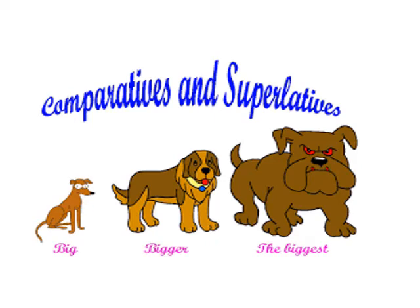Comparative and superlative. What's a comparative? A comparative means that I compare between two people, two things, or two animals. And superlative means that I'm comparing between one and a group. Any adjective has three degrees: the positive degree, the comparative, and the superlative.